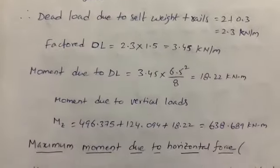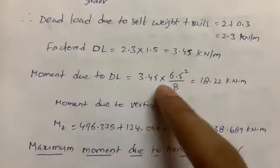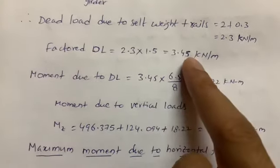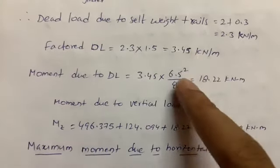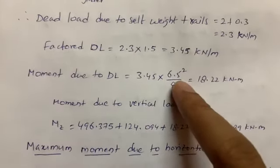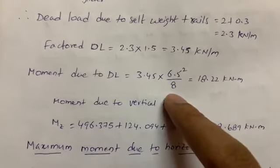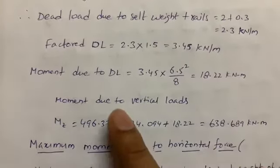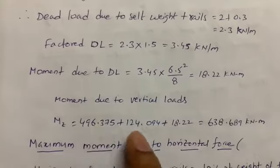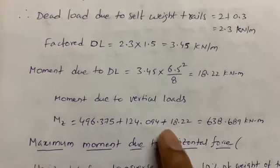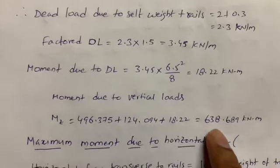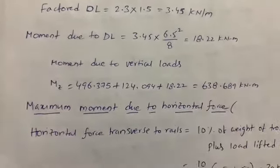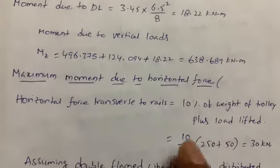Moment due to dead load uses the formula wL²/8: w = 3.45, L = 6.5 m, giving moment due to dead load. Adding all vertical load moments together — moving load moment, impact moment, and dead load moment — the total moment due to vertical loads is 638.689 kN·m.